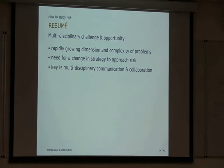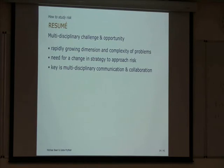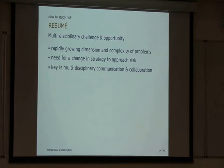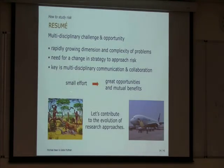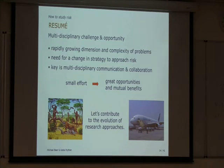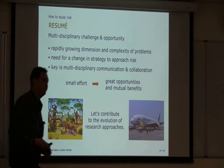In this kind of rough overview, our study of risk is really a multidisciplinary challenge but also an opportunity. We can get a lot out of it. We have a rapidly growing dimension and complexity of problems, which drives multidisciplinary research, and we have a need for a change in strategy to approach risk not only in one discipline but across all disciplines. A key is multidisciplinary communication and collaboration — with that we can have great opportunities and mutual benefits. What we need now is evolution in research approaches so our research is done in a multidisciplinary way to move faster. I would like to hand over to Gabe for the second part.